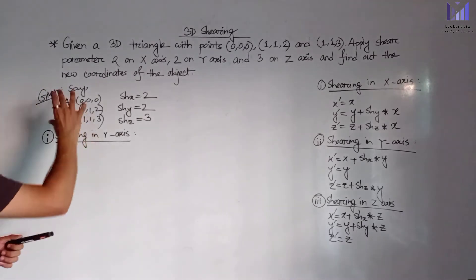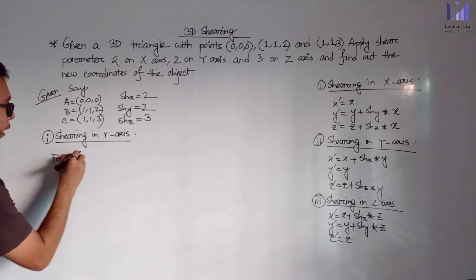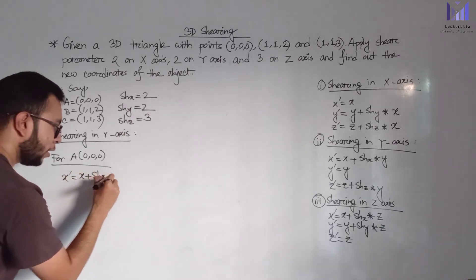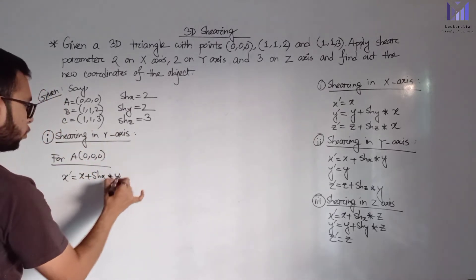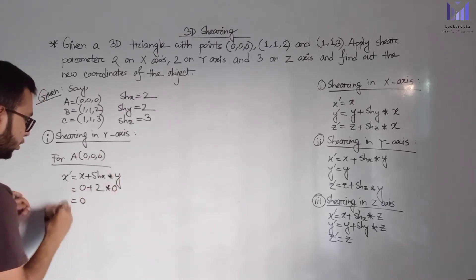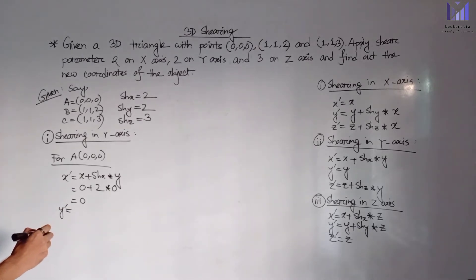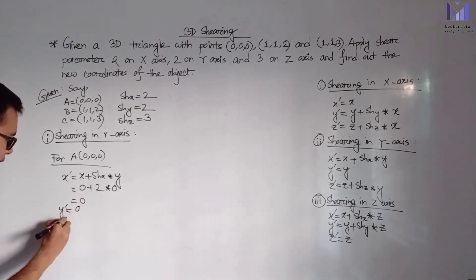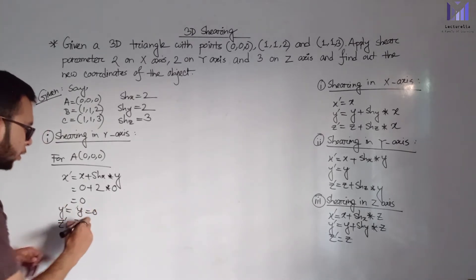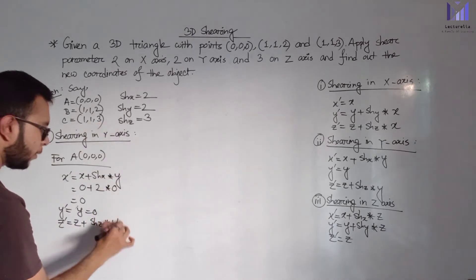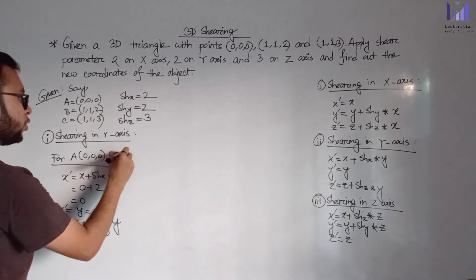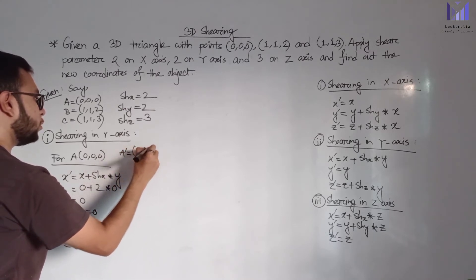Now shearing in Y-axis. For point A (0, 0, 0): X prime equals X plus shearing parameter X multiplied with Y — 0 plus 2 multiplied with 0 equals 0; Y prime equals Y which is 0; Z prime equals Z plus shearing parameter Z multiplied with Y — 0 plus 3 multiplied with 0 equals 0. So A prime is (0, 0, 0) for shearing in Y-axis.